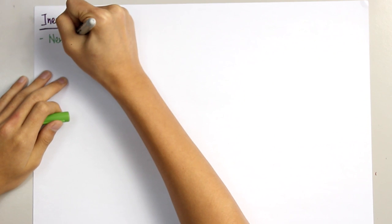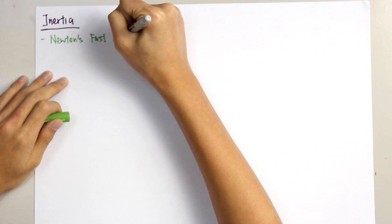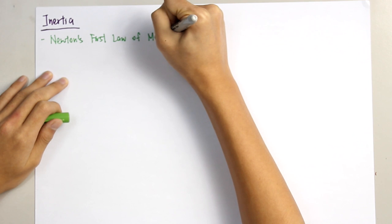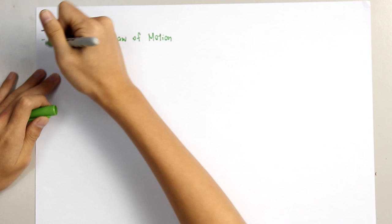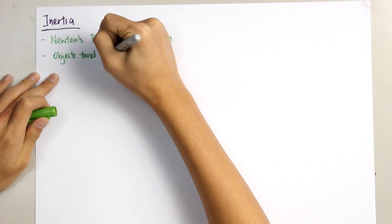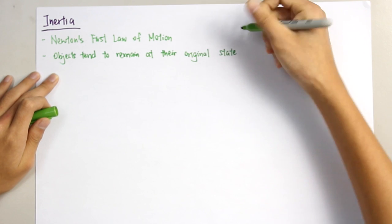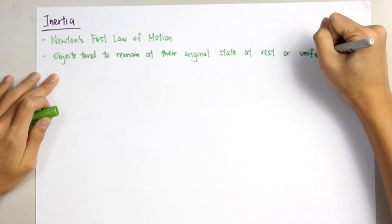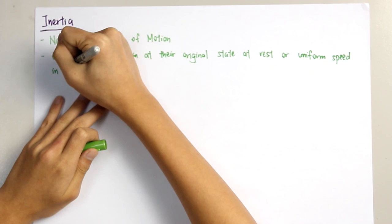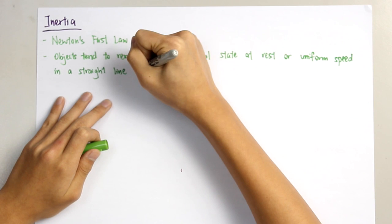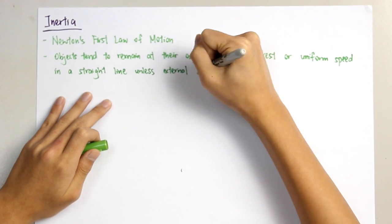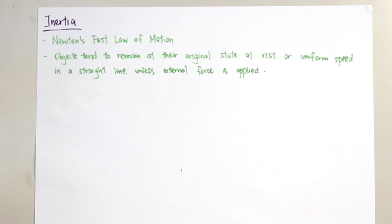The concept of inertia is based on Newton's first law of motion. Newton's first law of motion states that objects tend to remain at their original state of rest or uniform speed in a straight line unless an external force is applied.